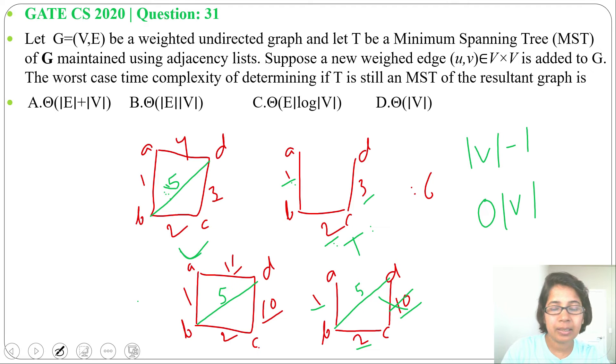Then if it is less than, then we're removing the higher weight. So that will be order of 1. So total running time will be order of V to check whether that minimum spanning tree is still minimum spanning tree of resultant graph after adding the new weighted edge.